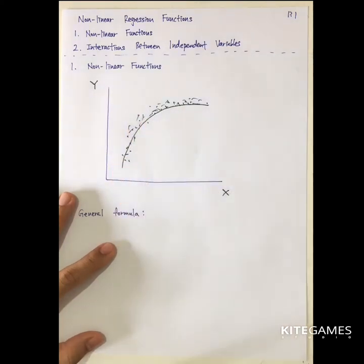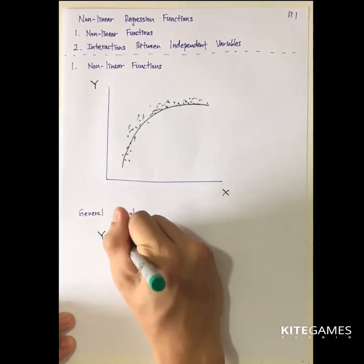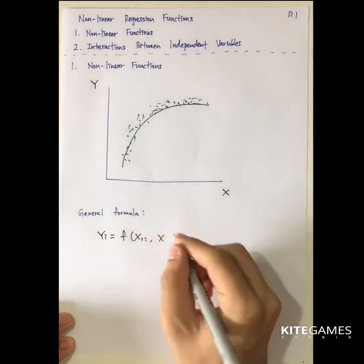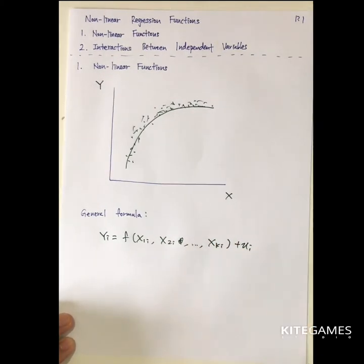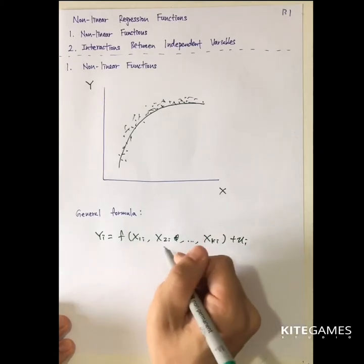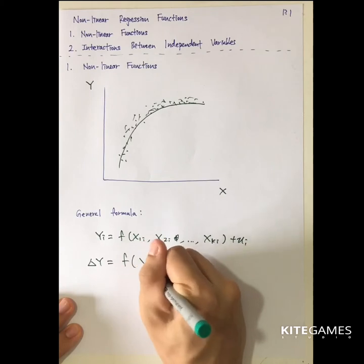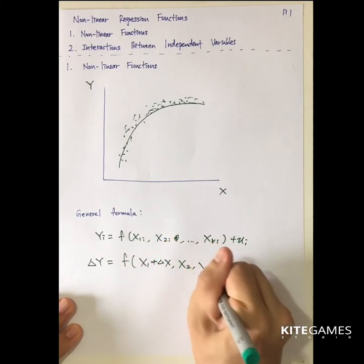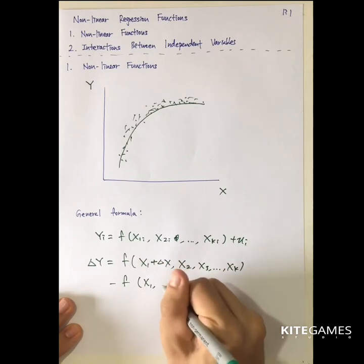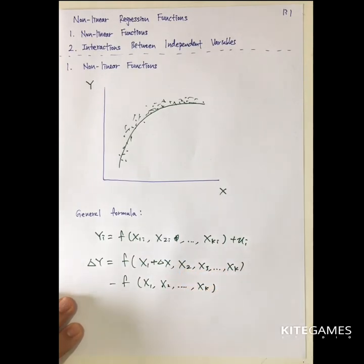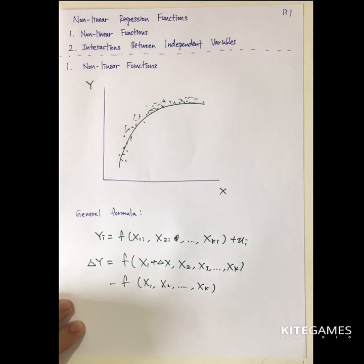In nonlinear regression functions, the general form is: yi is equal to a function of x1i, and in multiple regression, x2i through xki, plus ui. If you want to find the change in y when x1 changes by some unit, you calculate the change in y holding x2, x3 up to xk constant, minus the original value given x1, x2 up to xk. This gives you the change in y for a one-unit change in x.